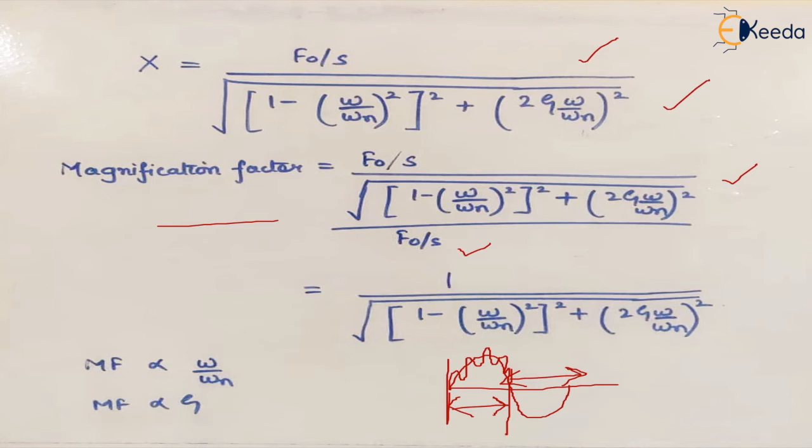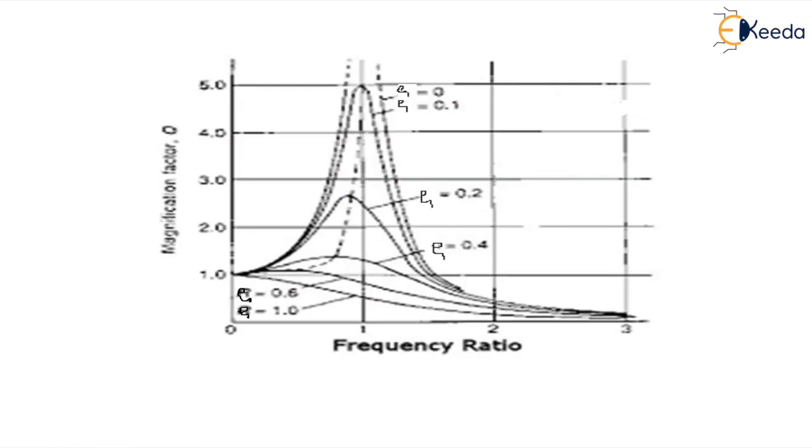And this magnification factor is dependent upon two things. One is omega upon omega n, the frequency ratio, and zeta which is the damping ratio.